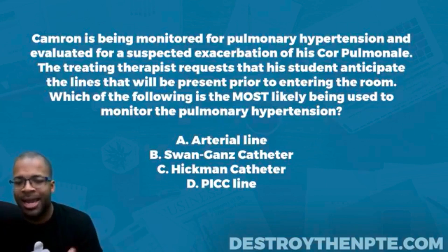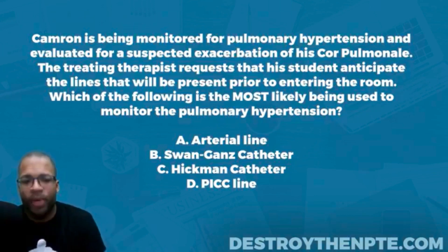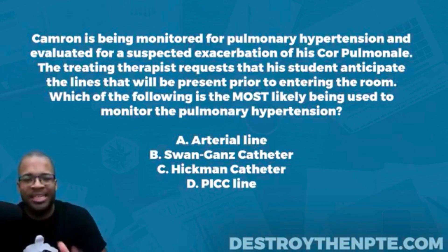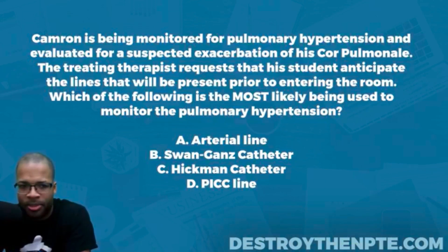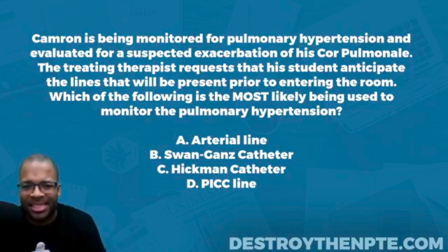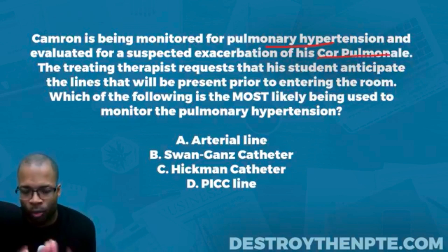The answer choices are: A, arterial line; B, Swan-Ganz catheter; C, Hickman catheter; and D, PICC line. When we look at this question, we have our patient Cameron — he's being monitored for pulmonary hypertension and evaluated for a suspected exacerbation of his cor pulmonale. We need to slow down a little bit because this is all really important.